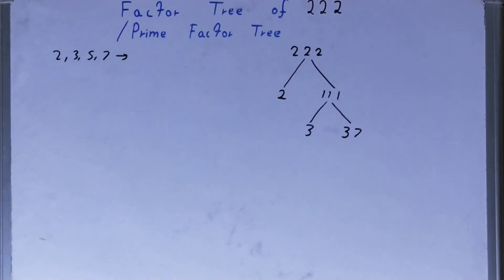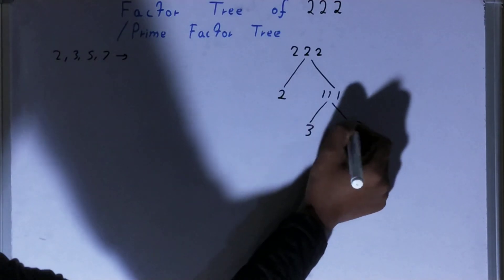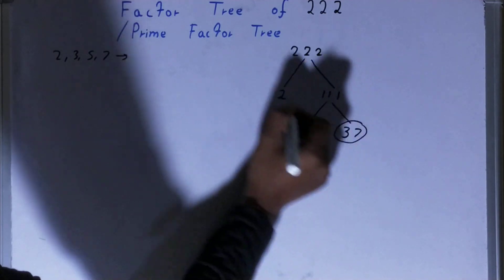The answer is no because 37 is a prime number and not a composite number, so your work is done over here. The only thing you need to do is circle the ending nodes or the terminating nodes like this.